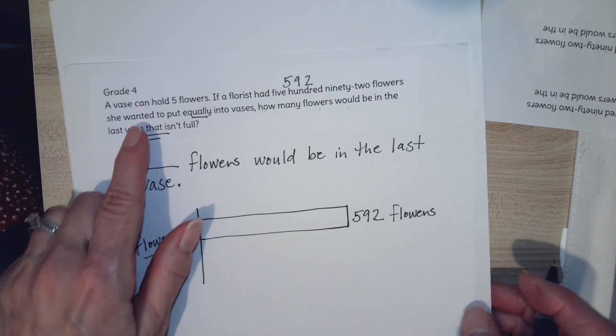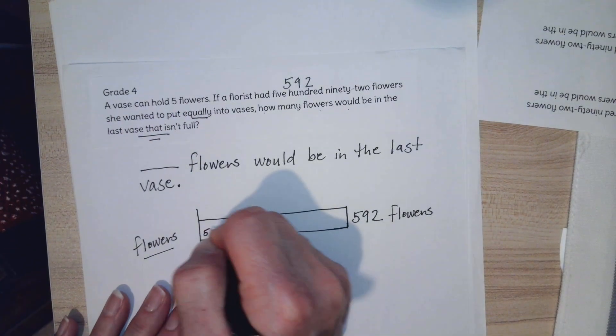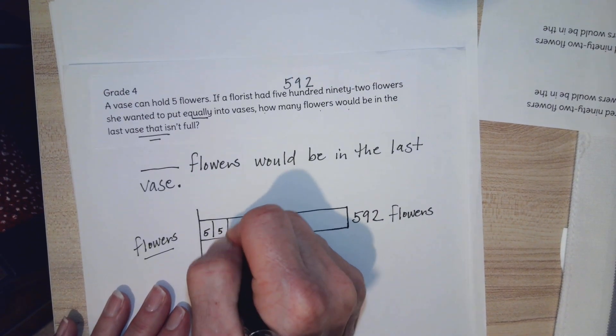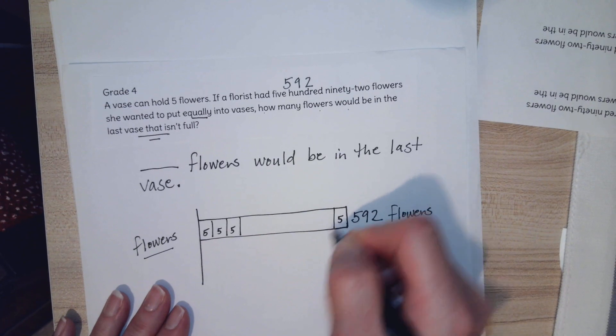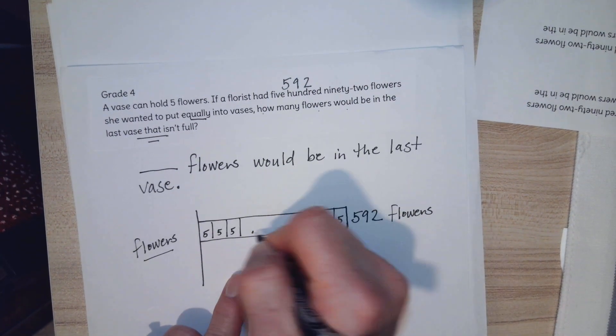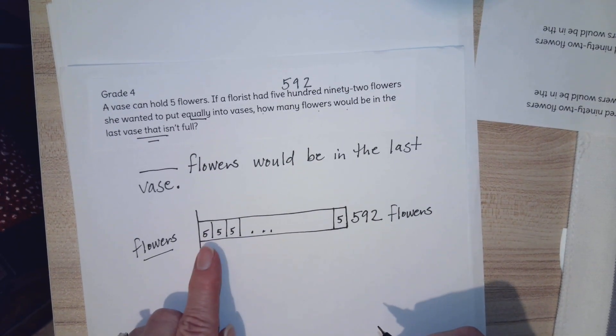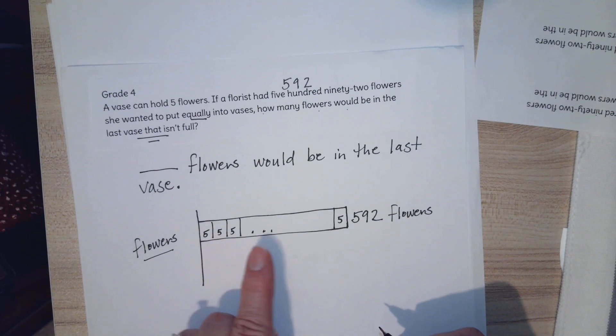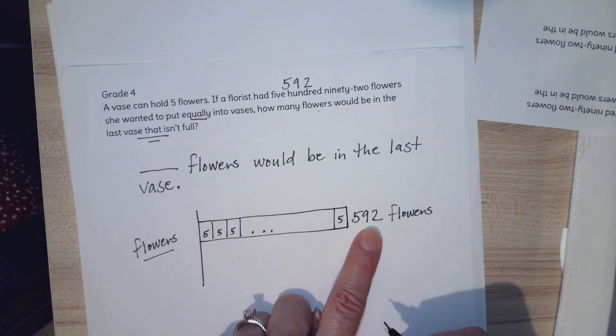Now they want us to put 5 flowers in each vase, so that means I have to find out how many fives are in 592. Well, I'm not going to skip count fives all the way to 592. But to represent this on a bar model, I can show that I'm going to be doing 5, 5, 5, 5, 5, to see how many fives go into 592.